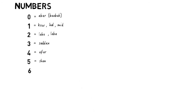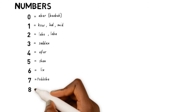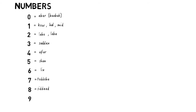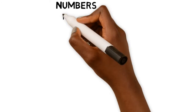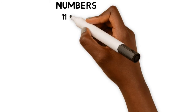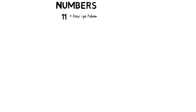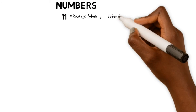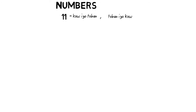Six is 'Lih.' Seven is 'Todobo.' Eight is 'Sidet.' Nine is 'Sagal' and ten is 'Toban.' Here is where dialects differ. The north calls 11 'Kou ii Tawan' while the south calls it 'Tawan io Kou.' The difference is one is 1 plus 10 and the other is 10 plus 1.